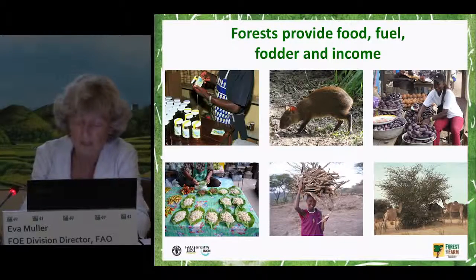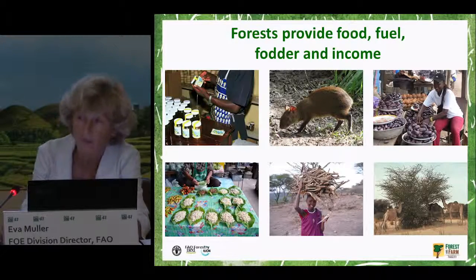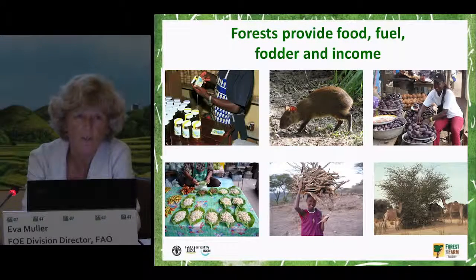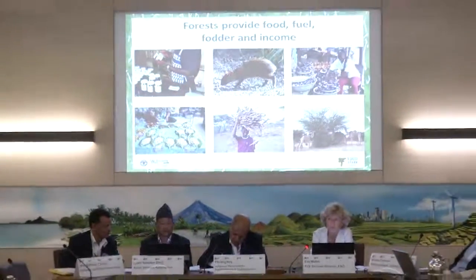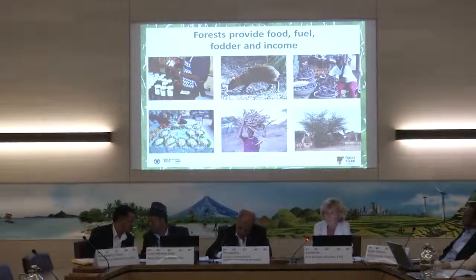Forests also provide foods, fuel, fodder, and income. There is a wide range of wild foods — ranging from leaves, seeds, nuts, honey, fruits, mushrooms, insects, and wild animals — that have been important for rural diets for millions of years. They also provide a source of income for rural people, especially for women in rural areas. Forests provide fodder for domestic animals and fuel wood to cook food. About one third of the world's population cooks with fuel wood, which is a very important contribution to food security that is often not recognized.